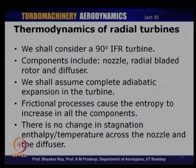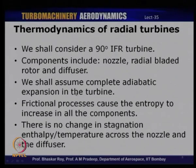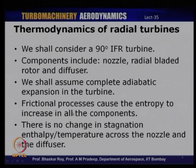For a 90-degree IFR turbine, the components include a nozzle, a radial bladed rotor, and a diffuser. We consider complete adiabatic expansion — no heat transfer across the walls — with frictional losses permitted, so entropy increases in all components. The stagnation temperature or enthalpy does not change across the nozzle or diffuser, since there is no work done and the flow is adiabatic. There is no change in stagnation parameters — stagnation temperature and enthalpy — in the nozzle and diffuser.